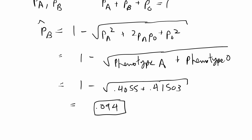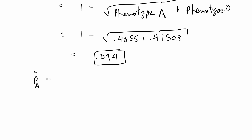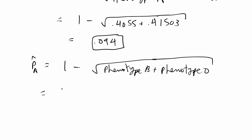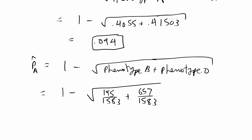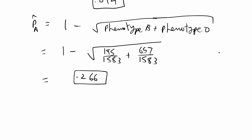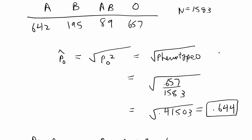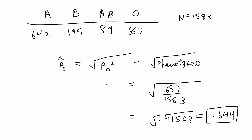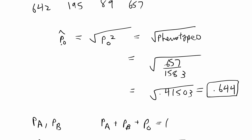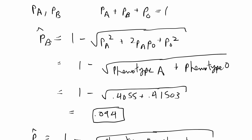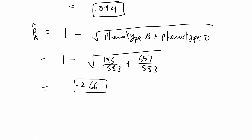We do basically the same thing to estimate the allele frequency of A. PA-hat equals 1 minus the square root of (phenotype B + phenotype O), which is 1 minus (195/1583 + 657/1583). That gives a final estimate for the allele frequency of A of 0.266. So using these Bernstein equations and assuming Hardy-Weinberg equilibrium, the estimated allele frequencies are: PO = 0.644, PB = 0.094, and PA = 0.266.